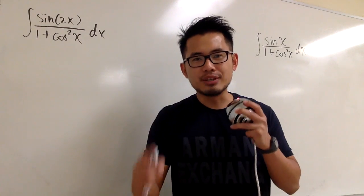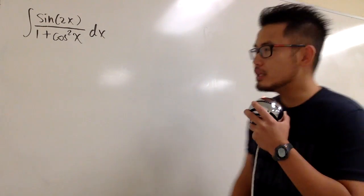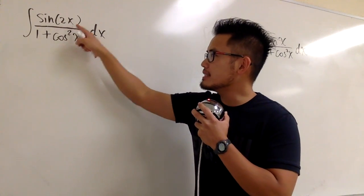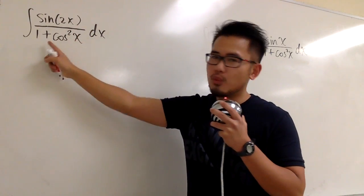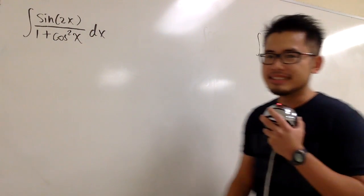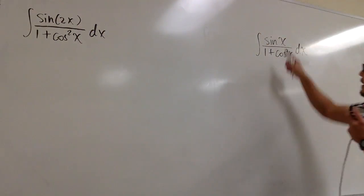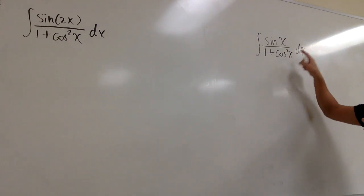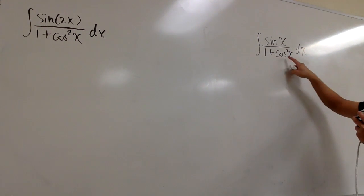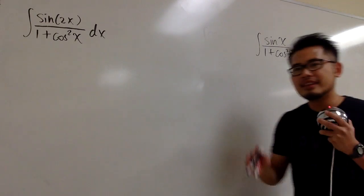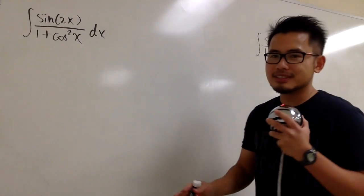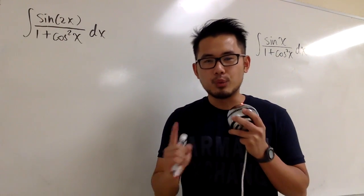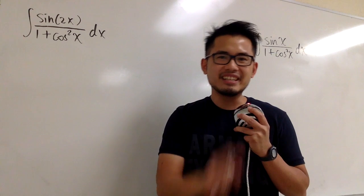Here is an integral battle. We have two integrals right here. The first one is the integral of sine of 2x over 1 plus cosine squared x. The second one is the integral of sine of x over 1 plus cosine squared x. As you can see, they look really similar — but which one is easier than the other?